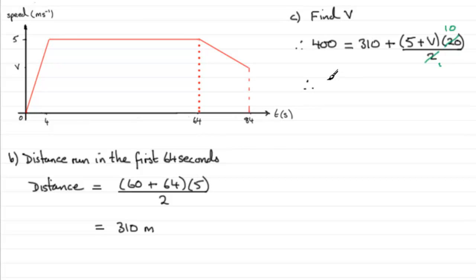So we've got 400 minus 310 leaves us with 90 equals, and then I don't think I want to expand the bracket because I can see that I could divide both sides now by 10. If I divide both sides by 10, I'm therefore going to have 9 equals 5 plus V. And if I take 5 from both sides, I end up with V equaling 4.